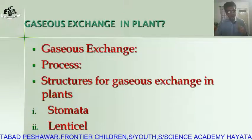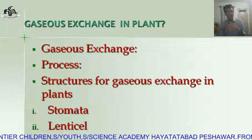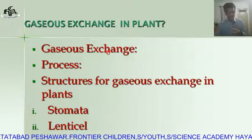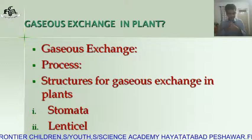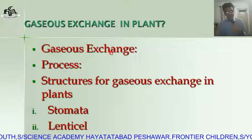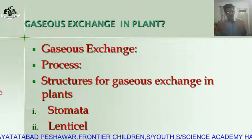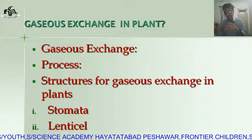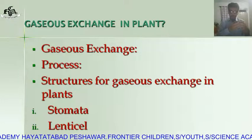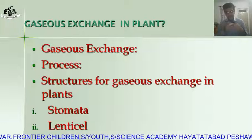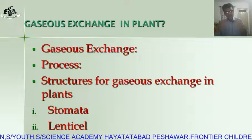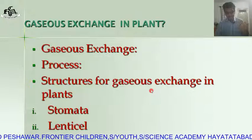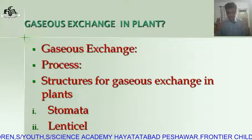Now let's start gaseous exchange in the plant. The exchange of gases like oxygen and carbon dioxide between the environment and the organism is called gaseous exchange. Gaseous exchange in plants occurs through diffusion — a process in which molecules move from higher concentration toward lower concentration. The next question is: what kind of structure is used for gaseous exchange in the plant? A plant does not have any specialized system for gaseous exchange.